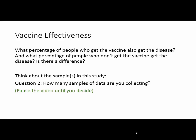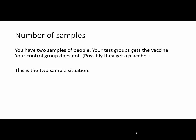Our next question is: how many samples of data are you collecting? Think about what's going on in this situation and determine how many samples there are. Pause the video, and when you're ready, move on. In this case, you have two samples of people. You have your test group, who gets the vaccine, and your control group, who gets a placebo — they don't get the vaccine. This is a two-sample situation.